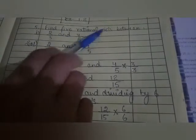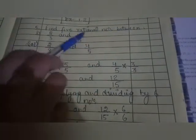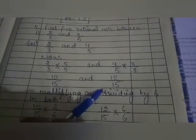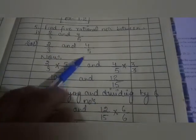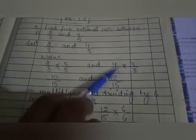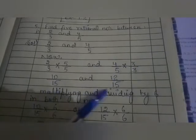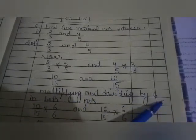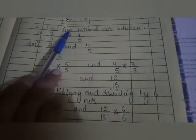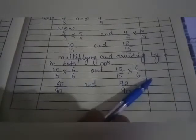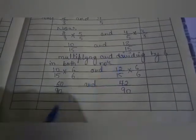The question was, find 5 rational numbers between 2 upon 3 and 4 upon 5. First of all, we made the denominator same by multiplying 5 in 2 by 3 and 3 in 4 by 5. When the denominator was same, we multiplied and divided by 6. Because the requirement of rational numbers is 5, that is why we multiplied and divided by 6 in both numbers.